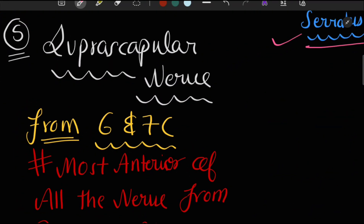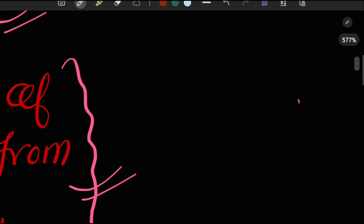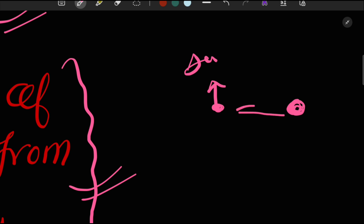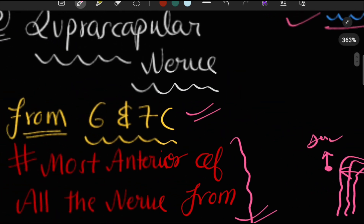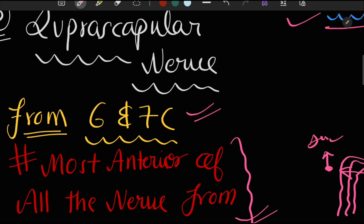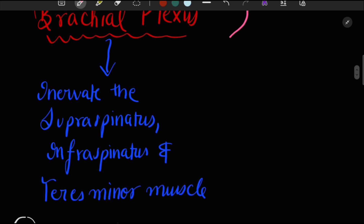The suprascapular nerve is formed from the sixth and seventh cervical spinal nerves. An important point is that it is the most anterior of all the nerves arising from the brachial plexus. It supplies the supraspinatus, infraspinatus, and teres minor muscles.